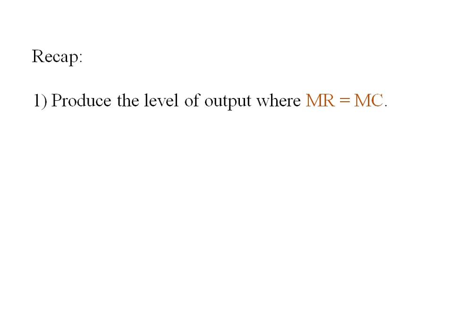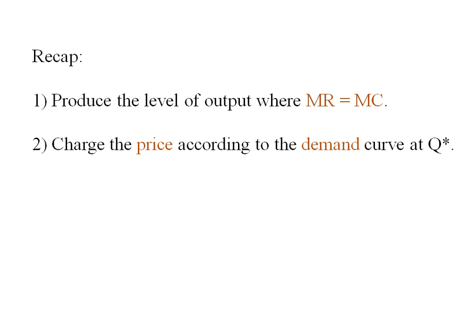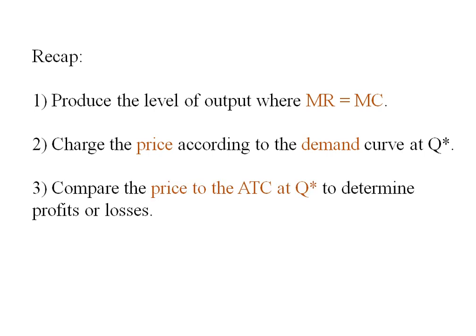As a recap, the firm's going to produce the level of output where marginal revenue and marginal cost are equal. They'll charge price according to the demand curve at Q star, and then they're going to compare that price to the average total cost at Q star to determine profits or losses.